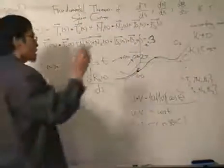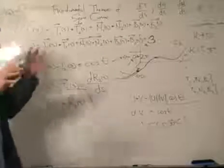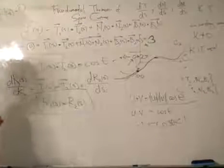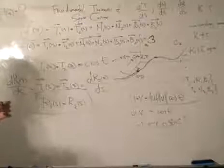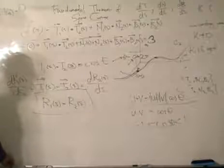The fundamental theorem of space curves says that the two curves are congruent. So they're not the same, they are congruent, meaning that they can be translated to each other when kappa and torsion are equal, and given that both of them are non-vanishing curve. That means kappa does not equal zero. And there you have it, the proof of the fundamental theorem of space curves.